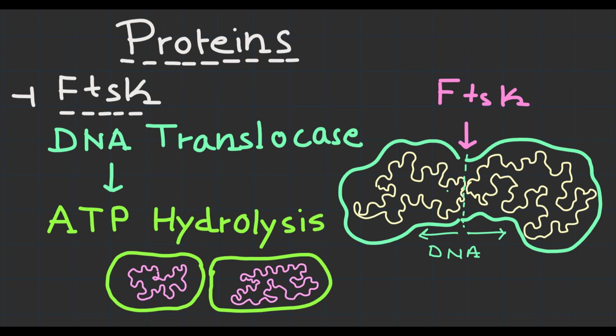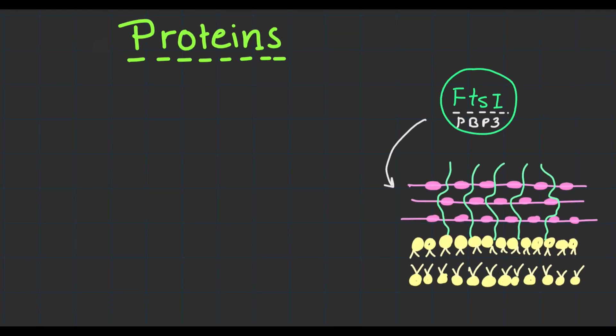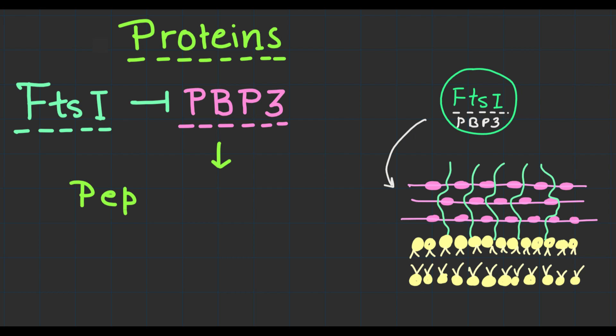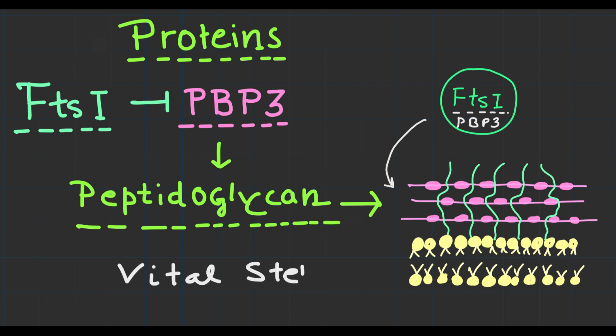Now let's talk about FtsI, also known as PBP3. This protein is involved in synthesizing the septal peptidoglycan that forms the new cell wall between the daughter cells. Without this vital step, bacterial cell division would not be possible.